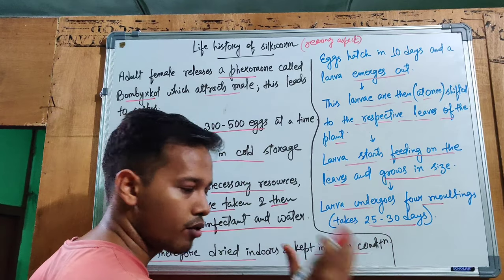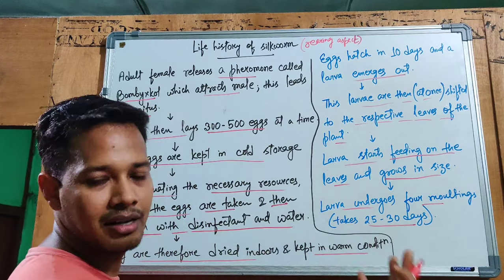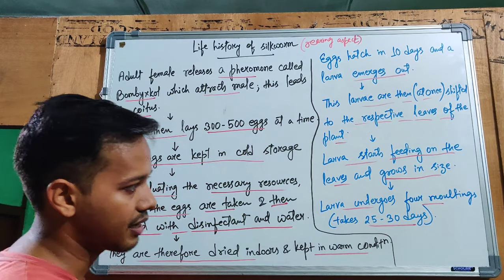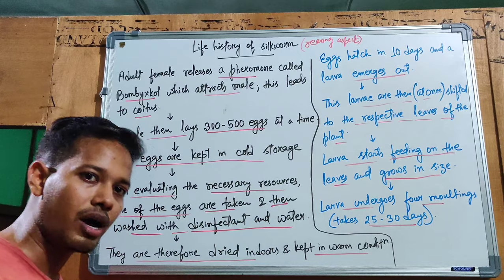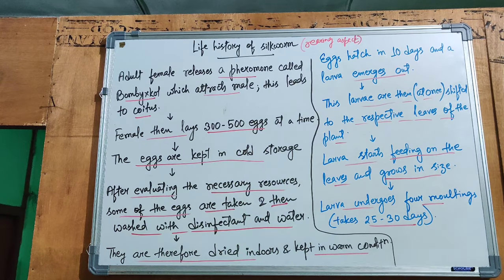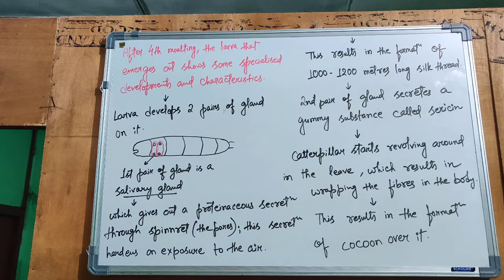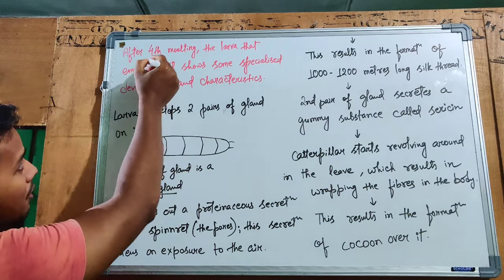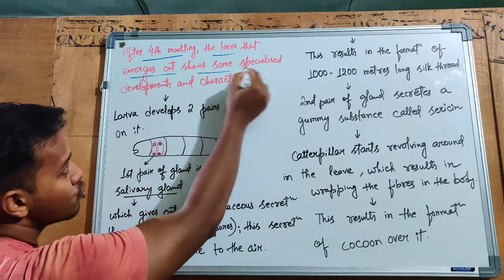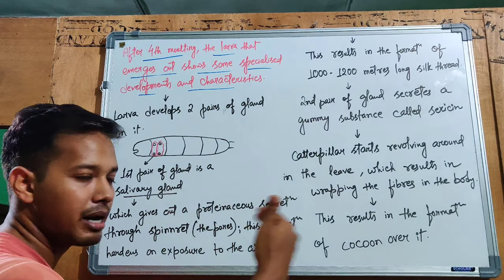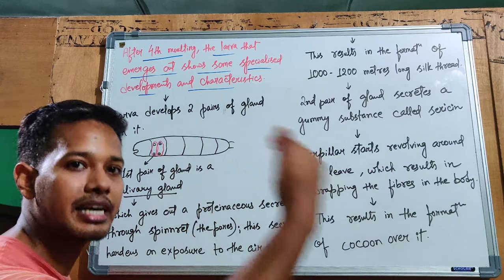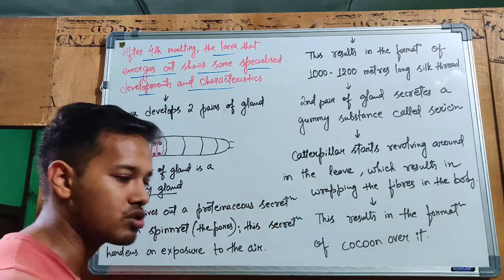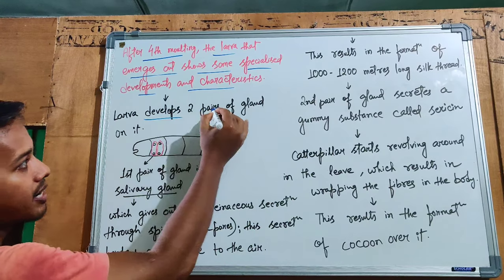The larva undergoes four moltings. After the fourth molting, the larva that emerges shows some specialized developments and characters. We will now discuss what specialized structures develop in this stage that are responsible for silk production.